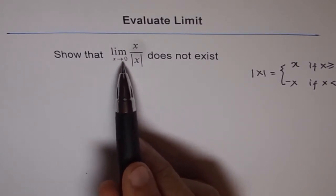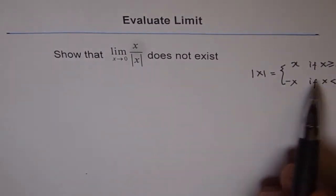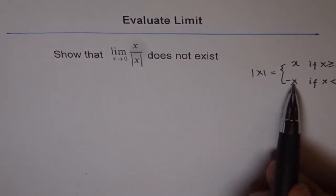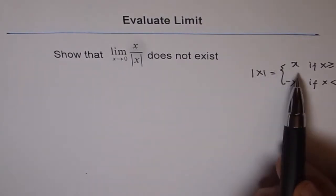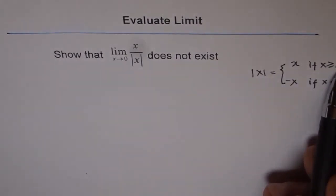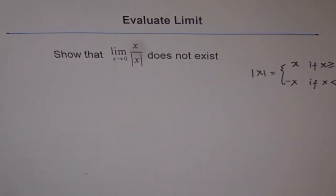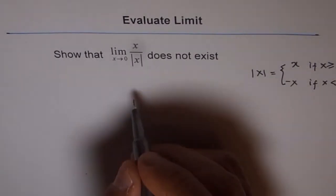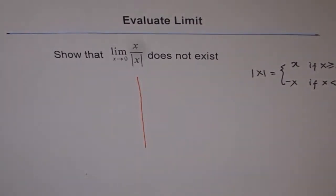So if you approach 0 from left side, then basically x is less than 0, so you will use minus x for absolute x. But if you approach the function from the right side, in that case x is greater than 0, and so the value of absolute x will be positive x. So basically it's a piecewise function, and in such cases we have to see the value of limits from both the sides.